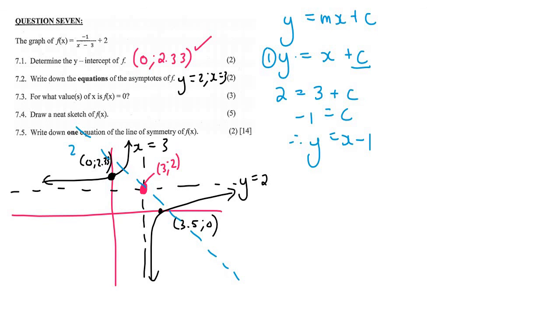Now the other one goes the other way. For this one, it's also a straight line, so y = mx + c. But this one has a gradient of -1. You must remember that - for a hyperbola, the symmetry lines always have a gradient of 1 and -1.